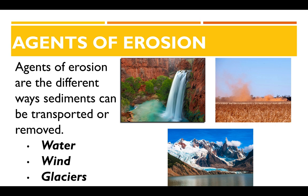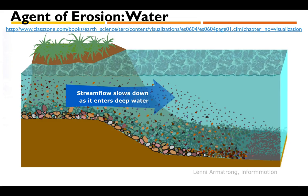Glaciers are large chunks of ice found in mountainous areas where the climate is relatively cold. You may not realize it, but glaciers are also moving — very slowly — and they bring rocks and different types of sediments with them as they move. Here's an animation to show you how water can transport sediments.